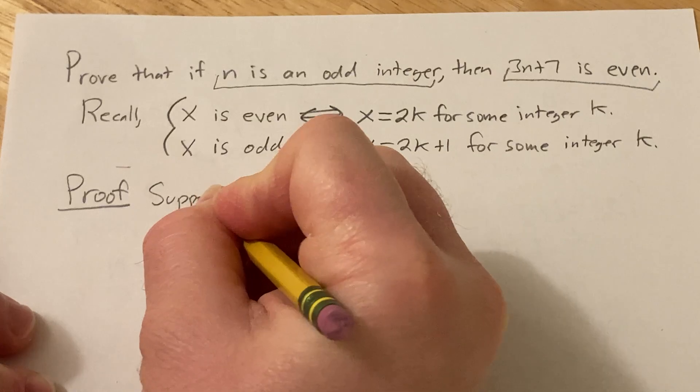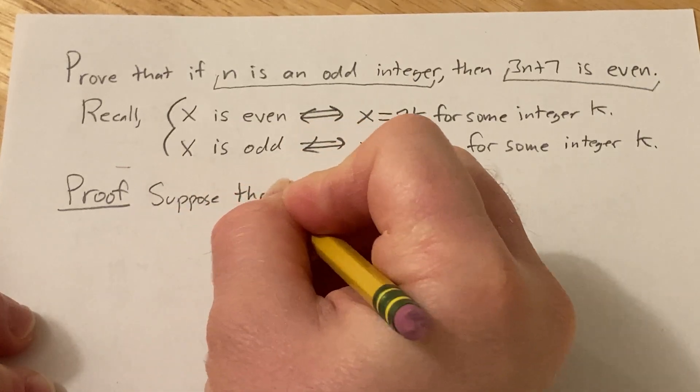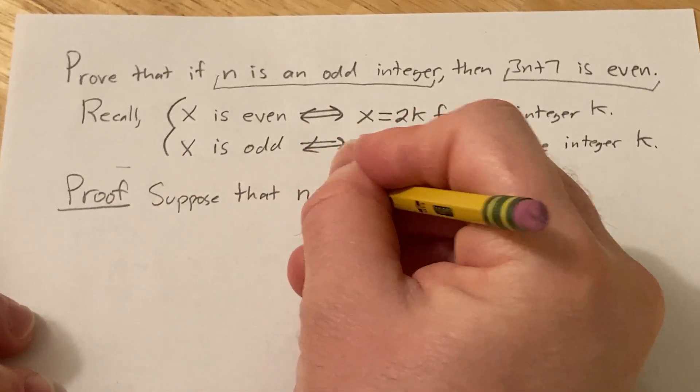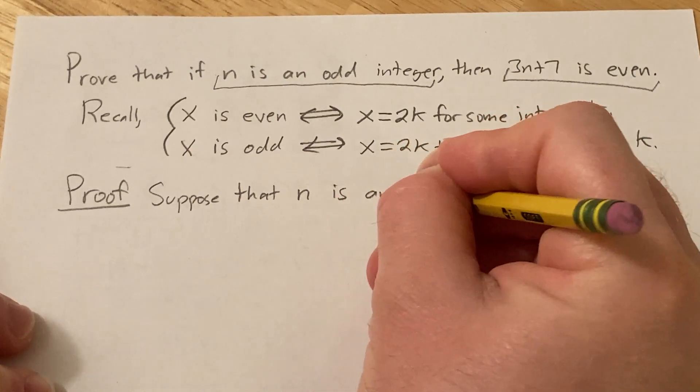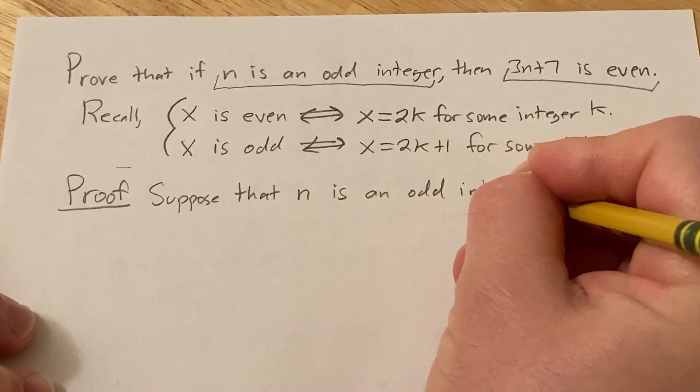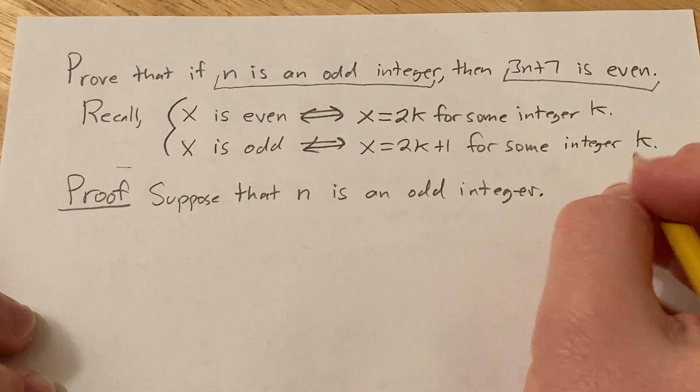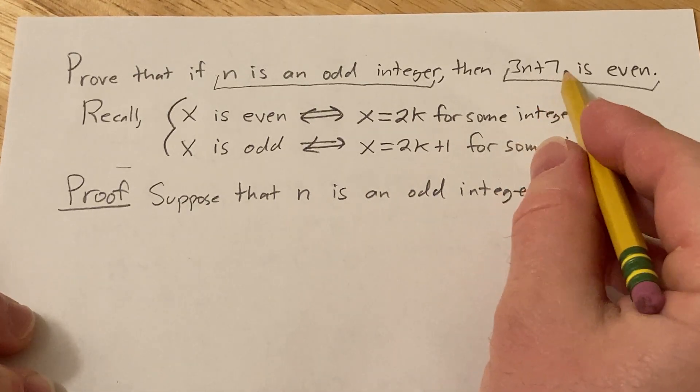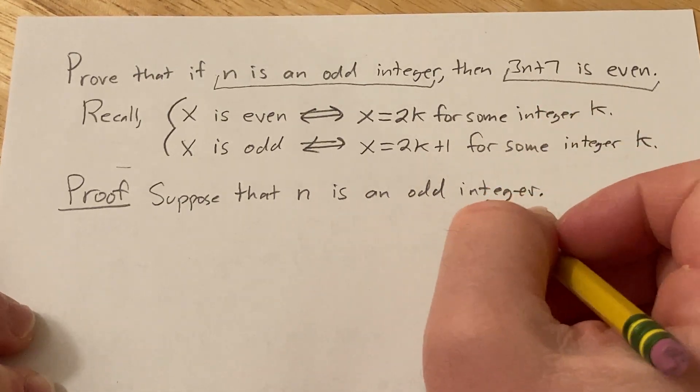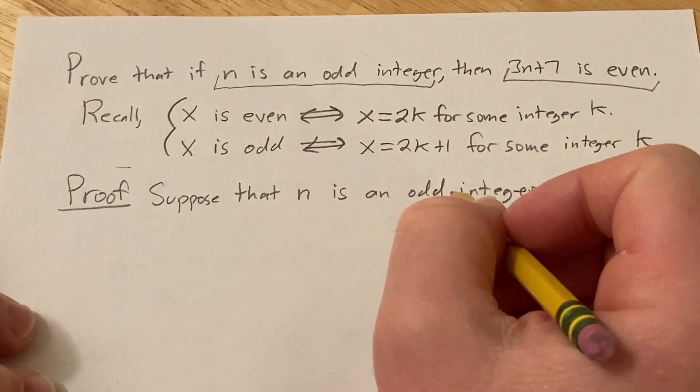So you start your proof by writing down this hypothesis. So you say something like, suppose that n is an odd integer. And now you have to show that 3n plus 7 is even. So it's usually kind of difficult just to make the leap from here to here.